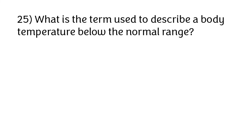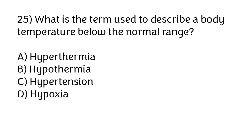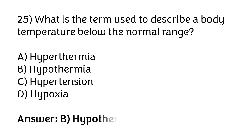What is the term used to describe a body temperature below the normal range? Options: hyperthermia, hypothermia, hypotension, hypoxia. The correct answer is option B — hypothermia is the term used to describe a body temperature below the normal range.